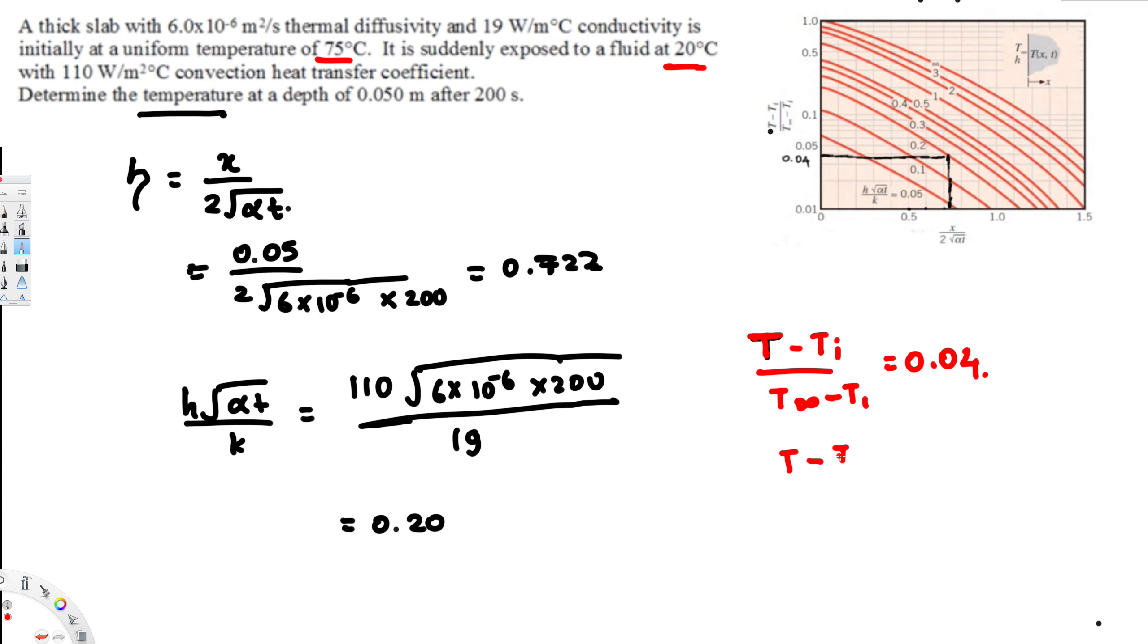t minus 75 over 20 minus 75 is equivalent to 0.04. So 20 minus 75, that's going to be a negative value, negative 55.